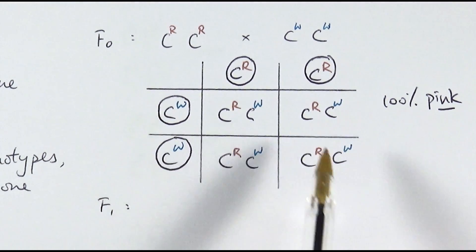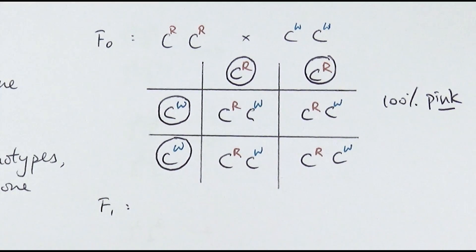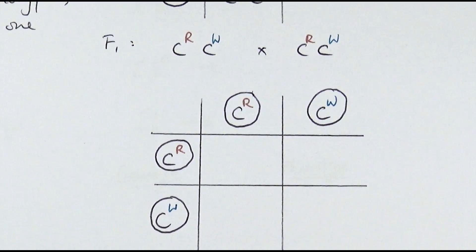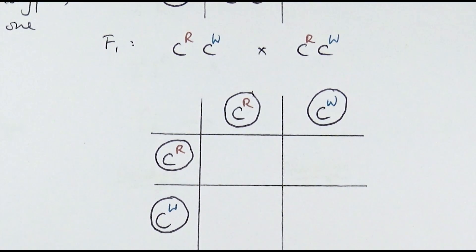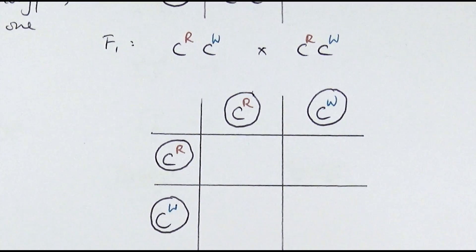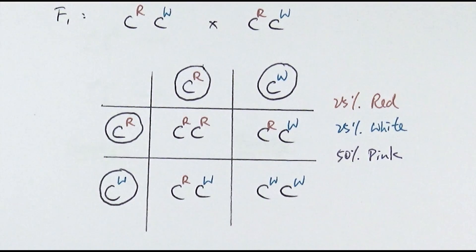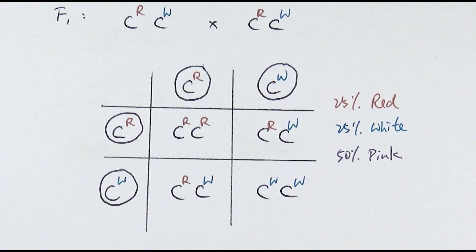Now if we take two of those offspring and cross them together — almost like a heterozygous cross — based on what we know, we'd expect a 1:2:1 ratio: 25% homozygous with both red alleles, 25% with both white alleles, and 50% heterozygous with the mix. From this Punnett square you can see 25% would be red, 25% would be white, and 50% would be pink. This is codominance, where both alleles are dominant and show a mix of phenotypes.